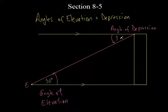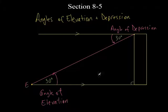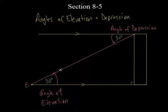The angle of depression is 30 degrees, and that's not inside the triangle. So what we do is use the angle of elevation because they're exactly the same. We use the right triangle and solve for things inside it. The angle of elevation and angle of depression are always measured from the horizontal to the line of sight — sometimes called line of vision.